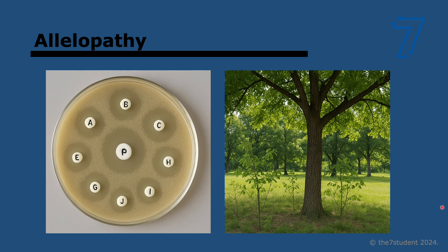The last topic is allelopathy — when a chemical released into the environment by an organism is toxic to another organism to deter competition. For example, antibiotics are secreted by microorganisms, and allelopathic agents are secreted into the soil by plants. Penicillium is a fungus that secretes the antibiotic penicillin to kill bacteria when food is scarce. The black walnut tree releases the chemical juglone, which stops the growth of other plants nearby.